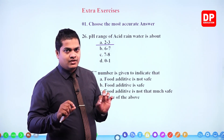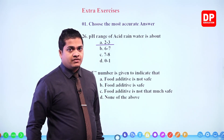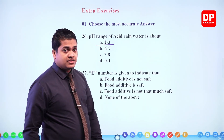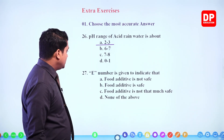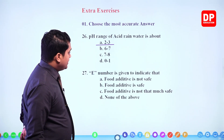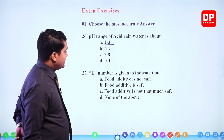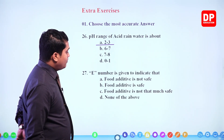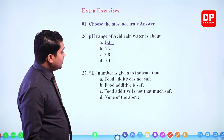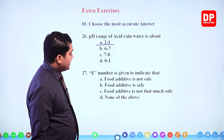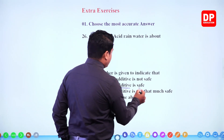Next: an E number is given to indicate that a food additive is safe. Option (a) food additive is not safe — incorrect. Option (b) food additive is safe — so B should be the answer.